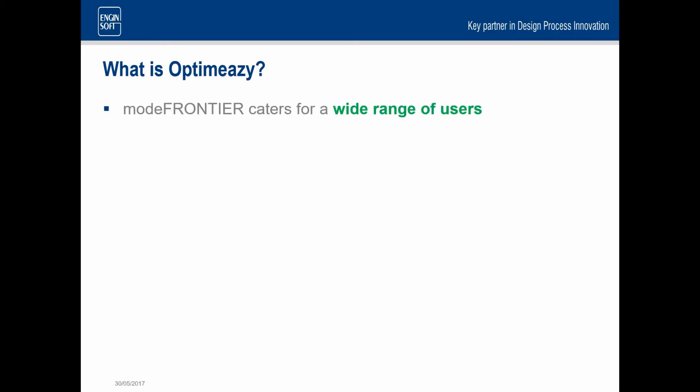With modeFRONTIER, we now have this licensing package called OptimEazy. And the reason for that is because it caters to a wide range of users, runs for basic or advanced users. Now inside modeFRONTIER, some of the algorithms and a number of the features have been sort of rationalized into either a basic or advanced mode. Sometimes it might be a manual mode or an automated mode.